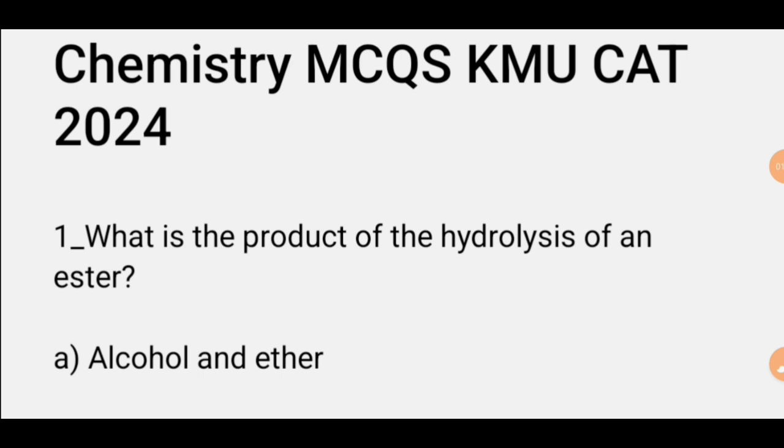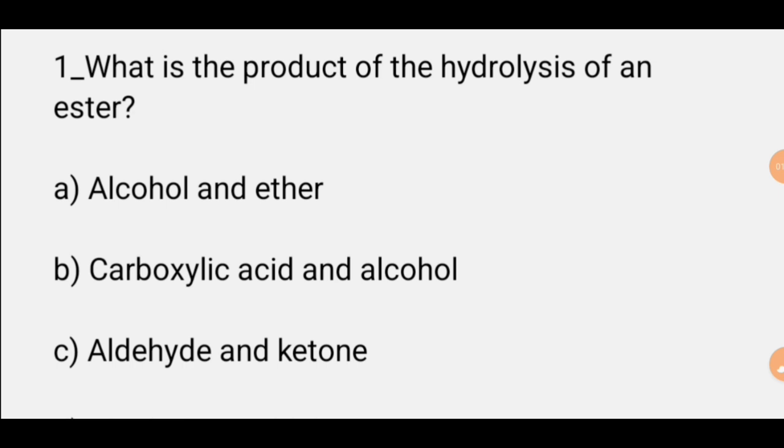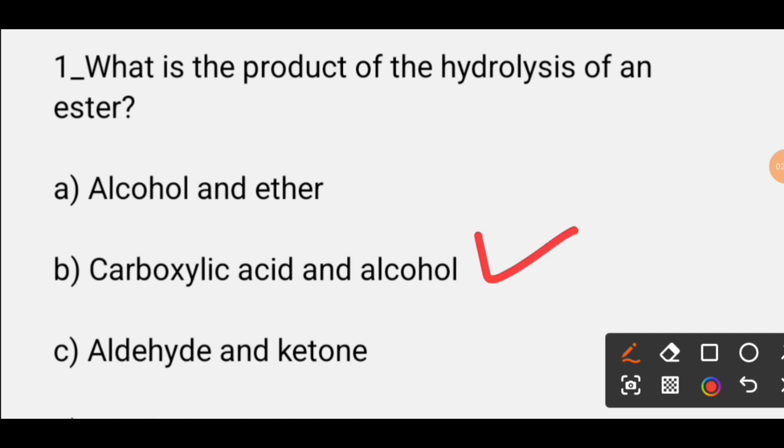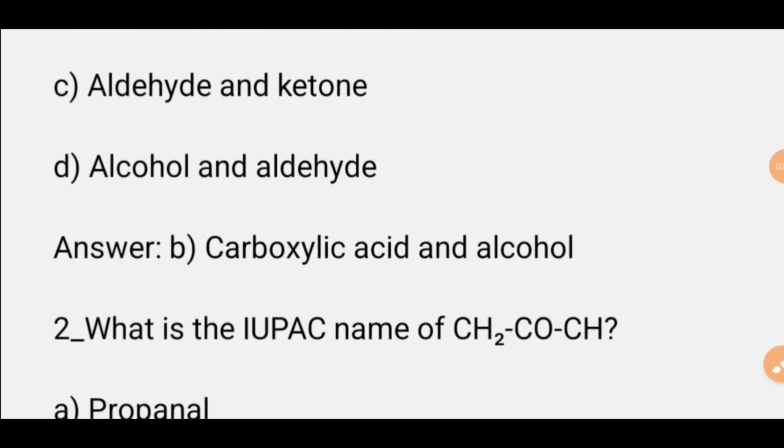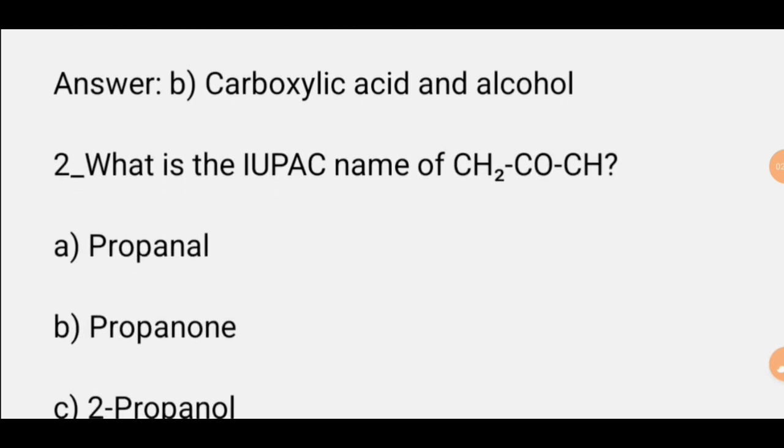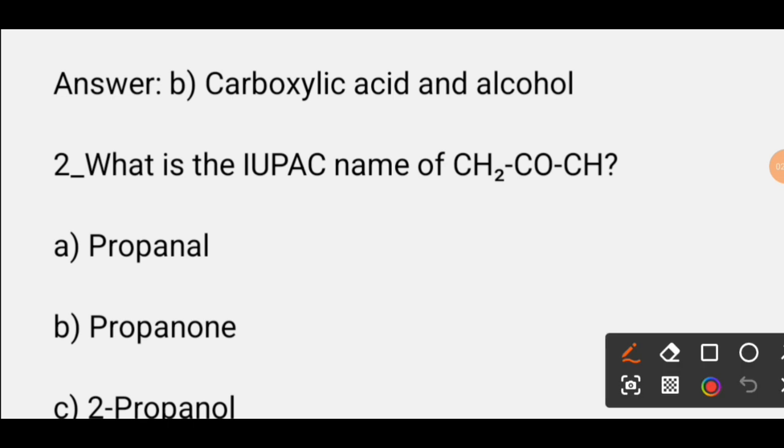MCQ number one: What is the product of hydrolysis of an ester? When ester undergoes hydrolysis, it breaks down. Options are: alcohol and ether, carboxylic acid and alcohol, aldehyde and ketone. The correct option is B, carboxylic acid and alcohol. When ester hydrolysis occurs, it converts to carboxylic acid and alcohol.